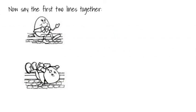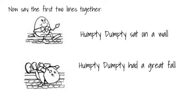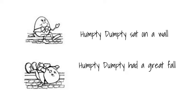Now say the first two lines together. Humpty Dumpty sat on a wall. Humpty Dumpty had a great fall. Humpty Dumpty sat on a wall. Humpty Dumpty had a great fall. Now faster. Humpty Dumpty sat on a wall. Humpty Dumpty had a great fall.